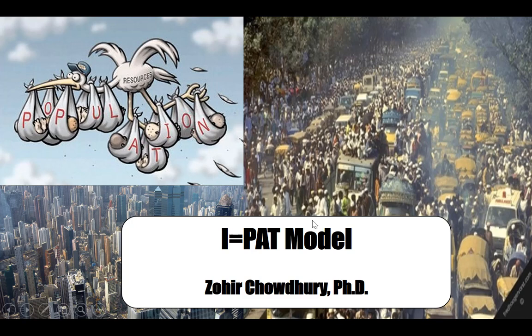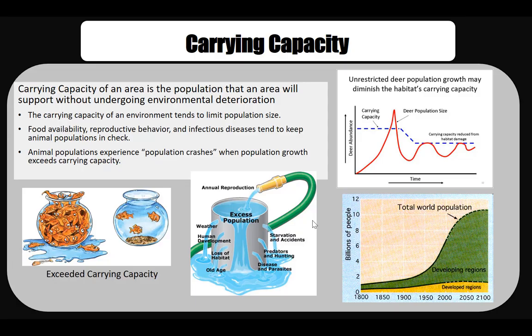My name is Zohiri Choudhury and today we'll talk about the I=PAT model as it applies to population and health. There are always limits to population growth in nature — populations cannot grow exponentially indefinitely. Exploding populations always reach a size limit imposed by the shortage of one or more factors such as water, space, and nutrients.